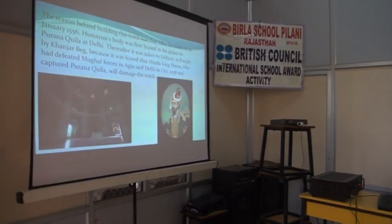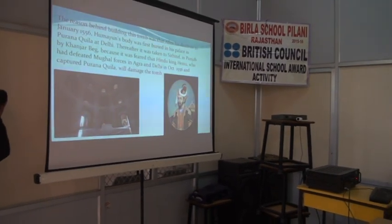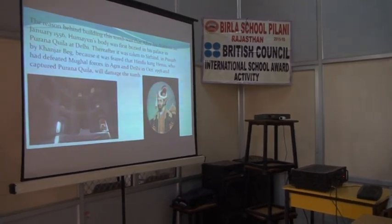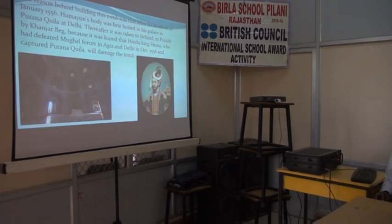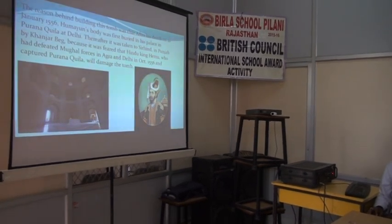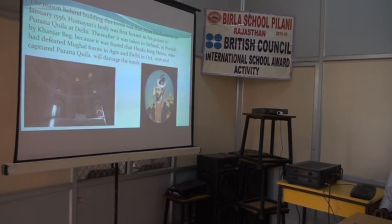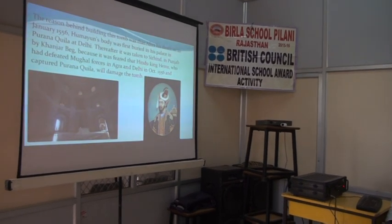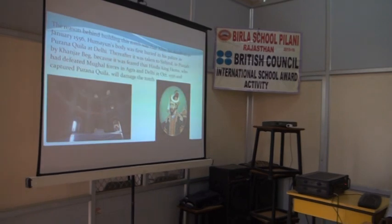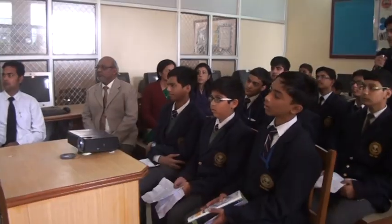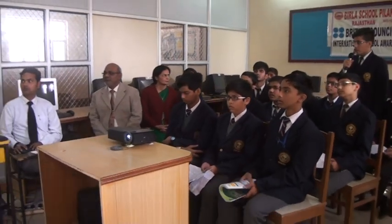The picture shown is the tomb of Humayun. The reason behind building this tomb was that after his death on 20th January 1556, Humayun's body was first kept in the palace in Purana Qila at Delhi. Thereafter, it was taken to Sirhind in Punjab by Khanzada Beg, because it was feared that Hindu king Hemu, who had defeated Mughal forces in Agra and Delhi in October 1556 and captured Purana Qila, would damage the tomb.